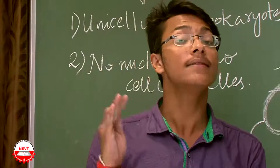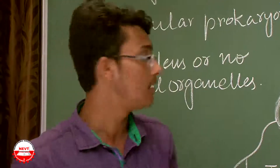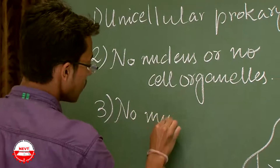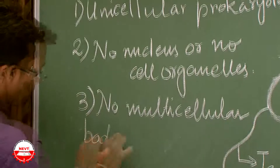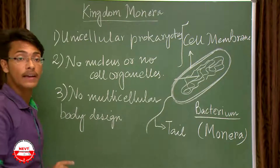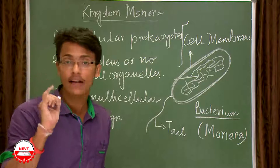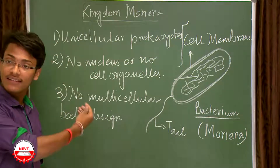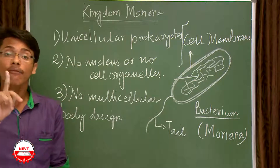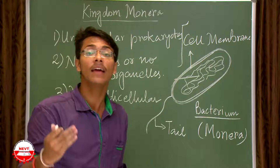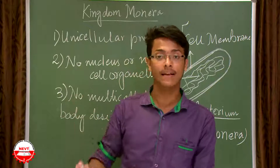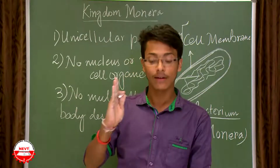The third characteristic is there is no multicellular body design — they have only one cell. Since there is only one cell, there will be no division of labor. One cell performs all functions of the organism.